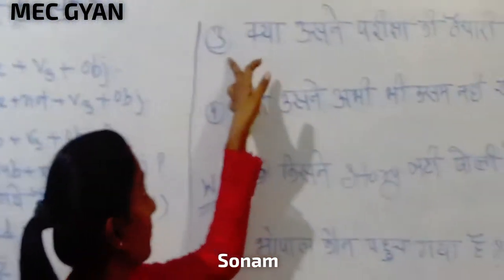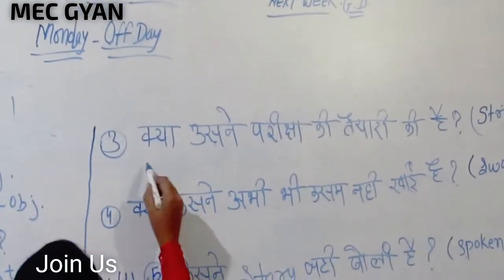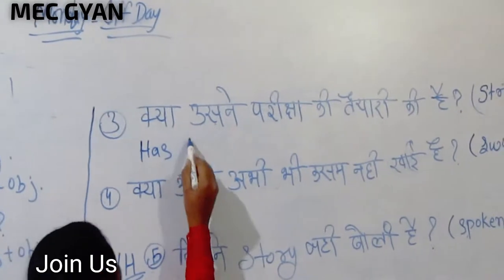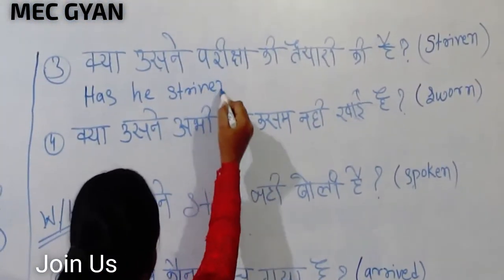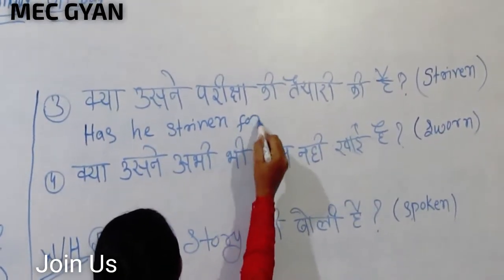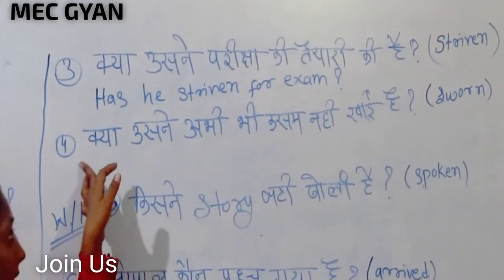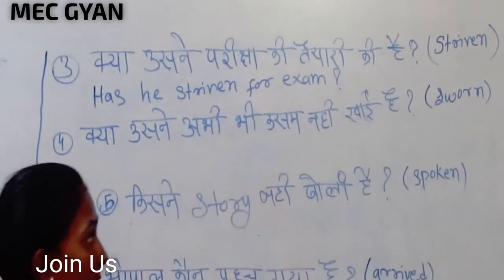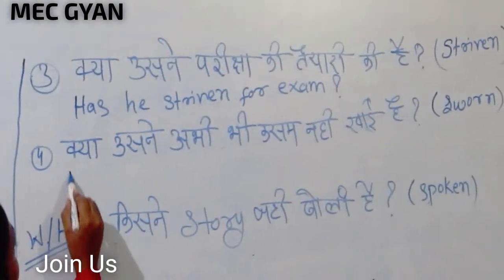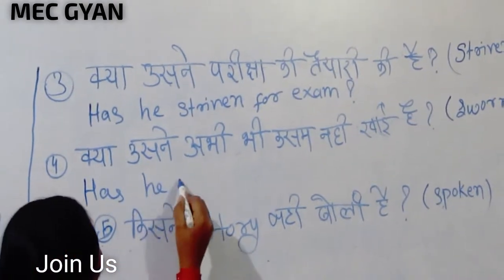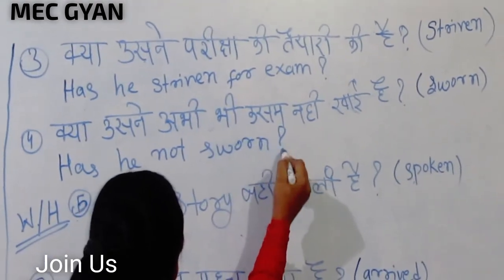And our third example is: what has he prepared? This will be different. Has he prepared for exam? So the interrogative question form ends with a question mark.